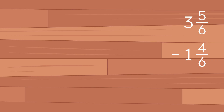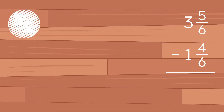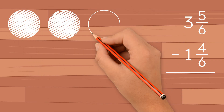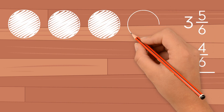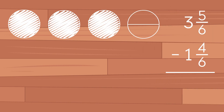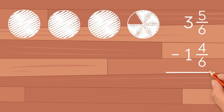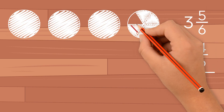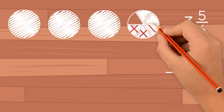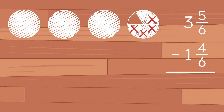Let's try another example: 3 and 5 sixths minus 1 and 4 sixths. Let's shade the model. We have 3 wholes and 5 sixths. First, we subtract the fractional parts: 5 sixths minus 4 sixths gives us 1 sixth.